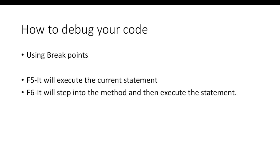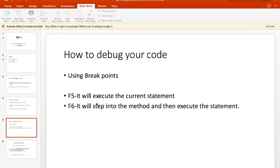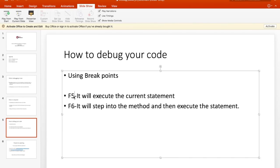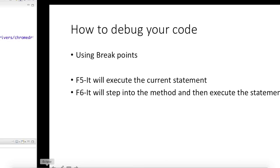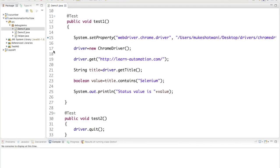To debug, we need to set a breakpoint. F6 is to execute the current statement — step over — and F5 is for step into. We will use F5 to step into a method and execute the statement, and F6 to execute the current statement. We will use the breakpoint to stop execution at that particular statement.